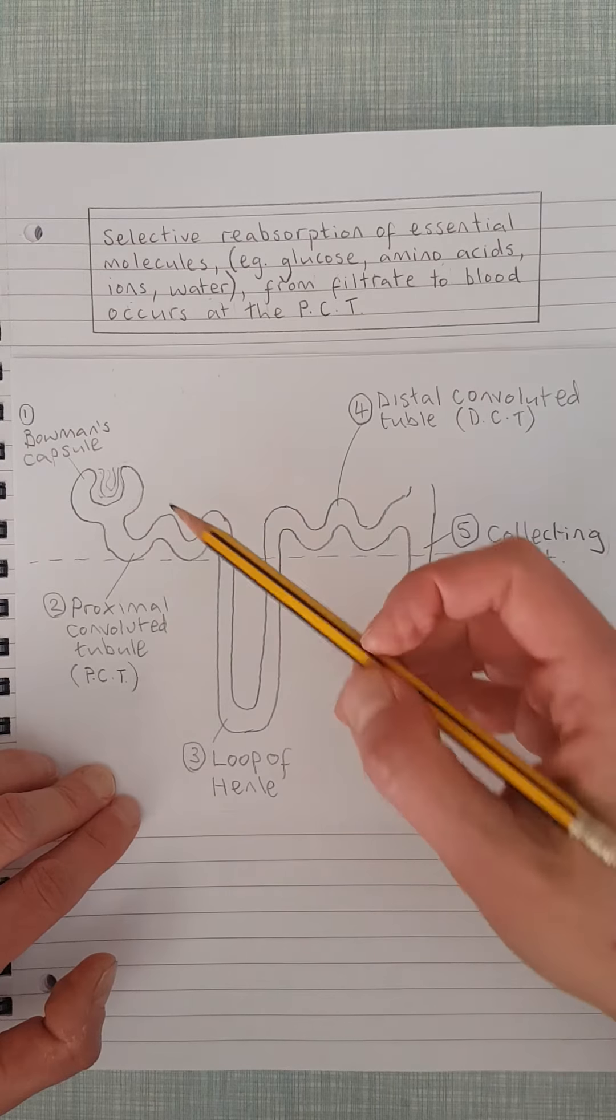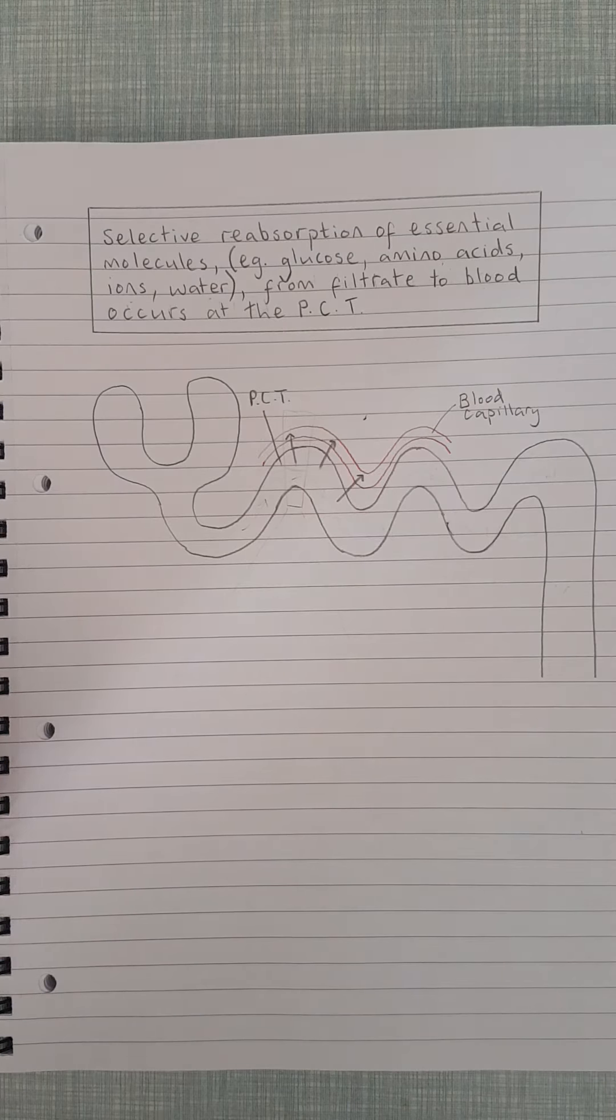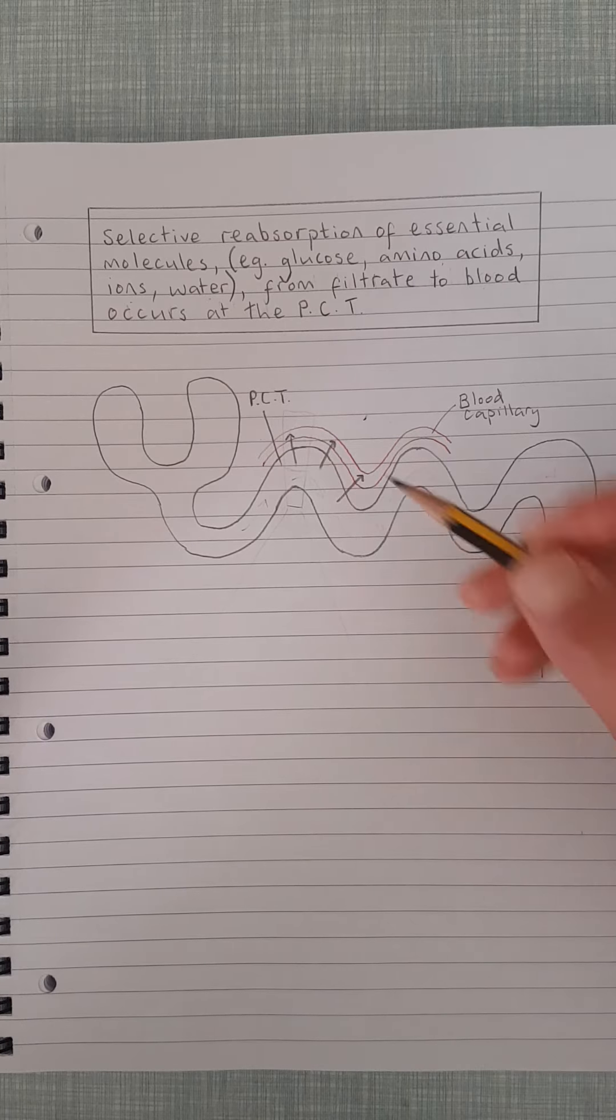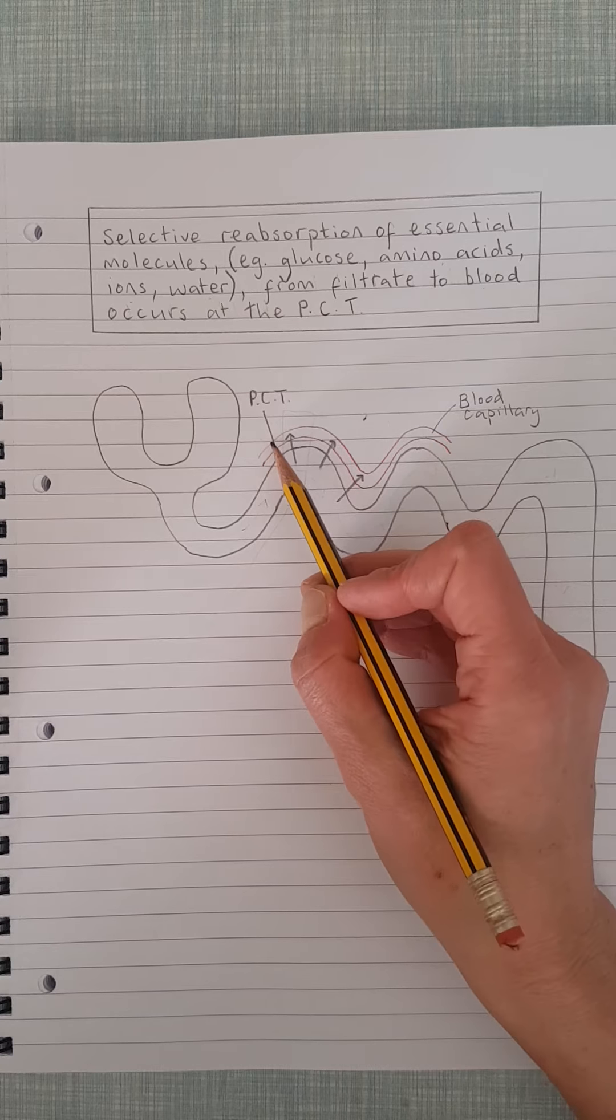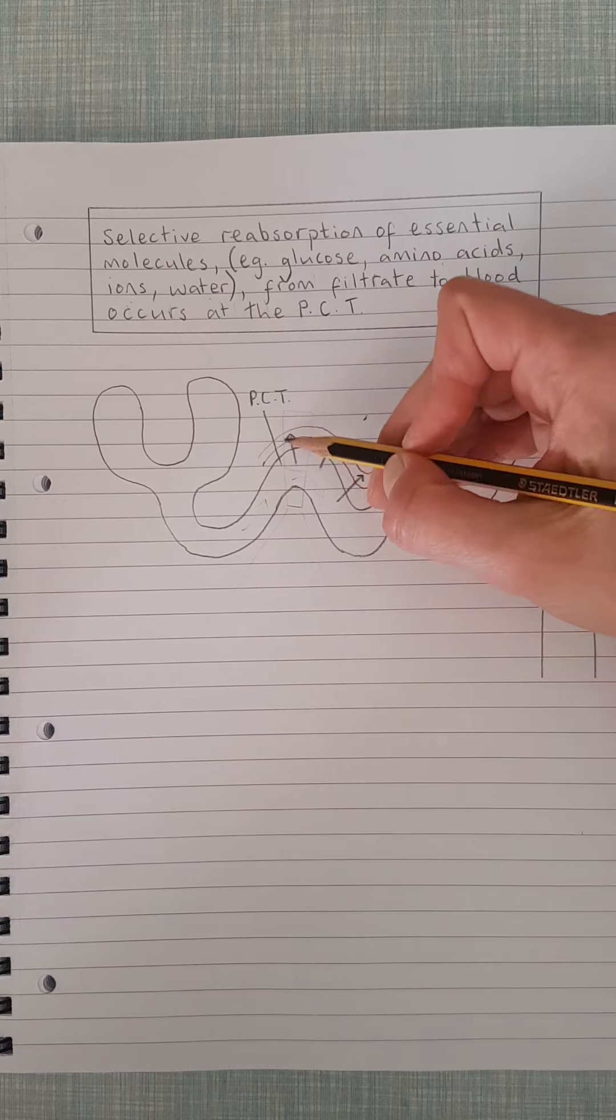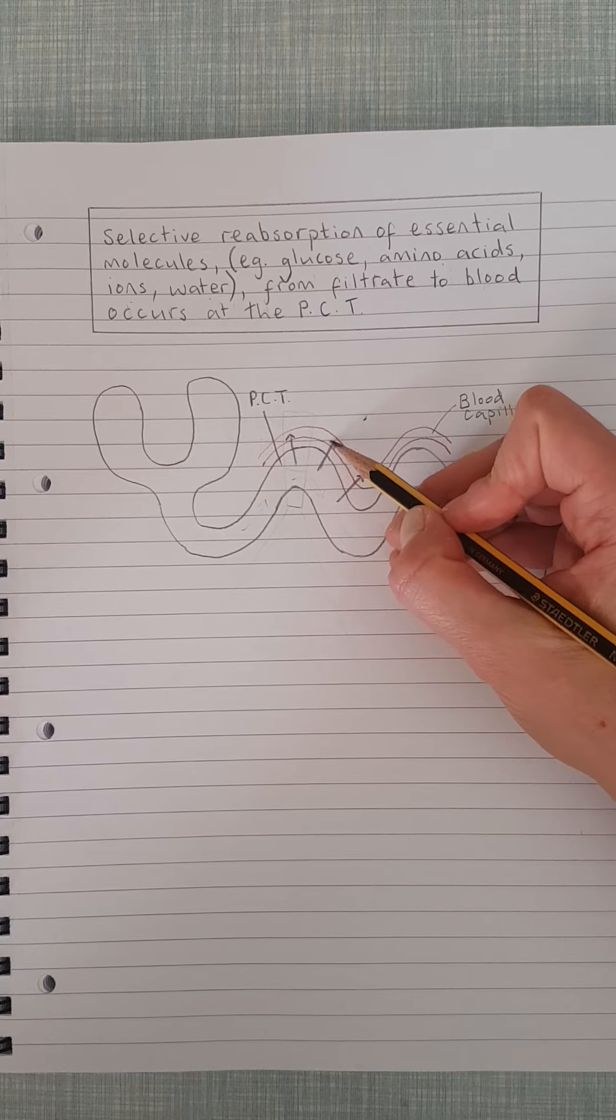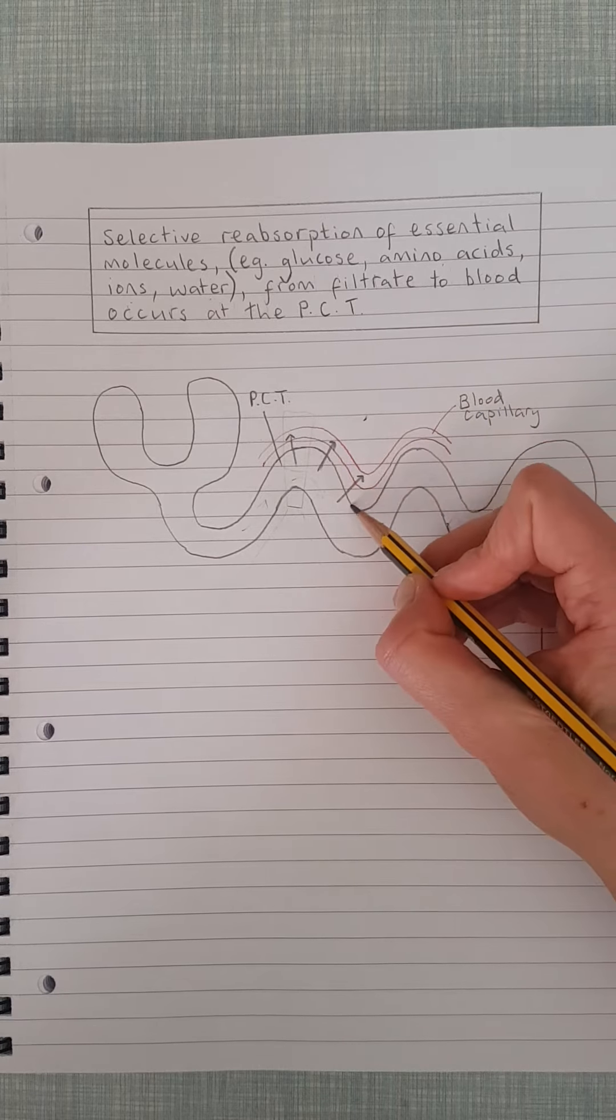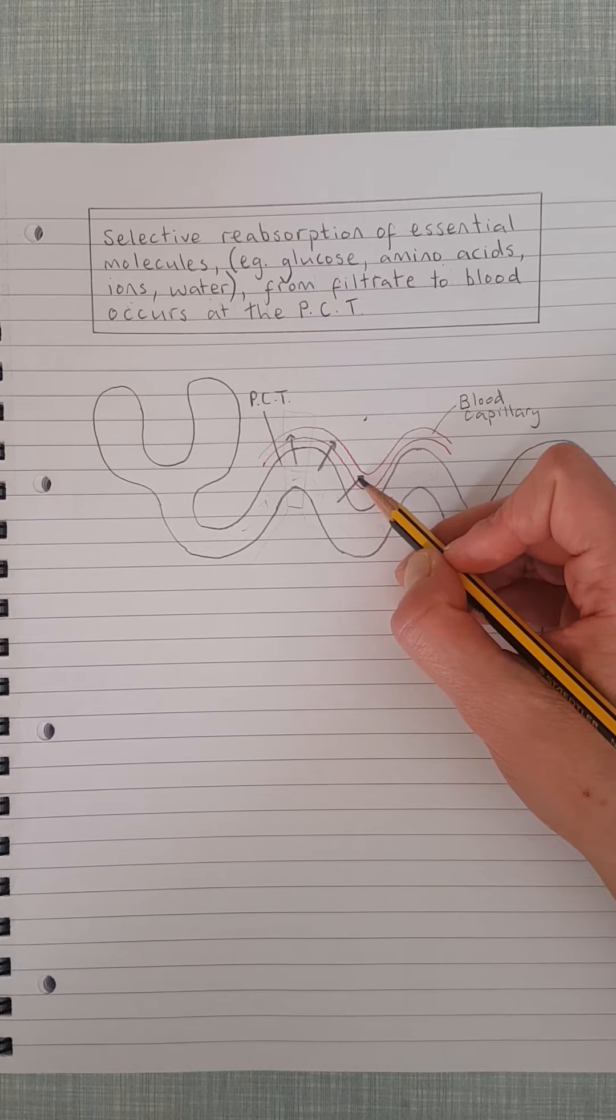What I've done is I've just enlarged this part of the diagram. Here it is, and we can see that there is the proximal convoluted tubule, and I've just drawn in one capillary, and we can see the little arrows are indicating that things are being absorbed.